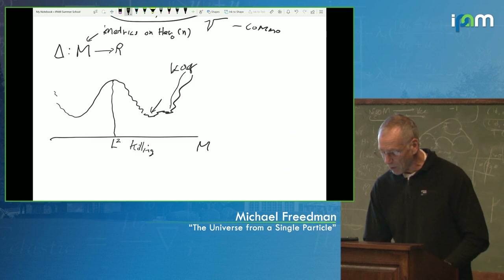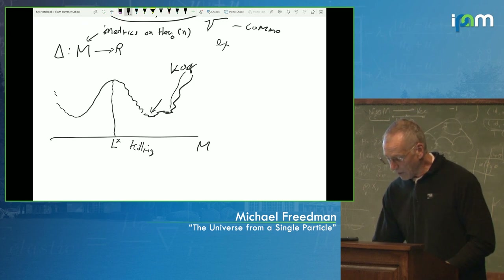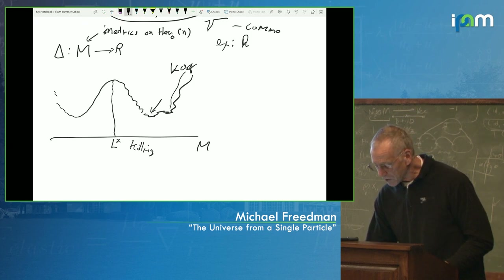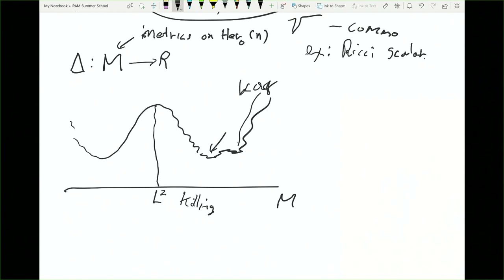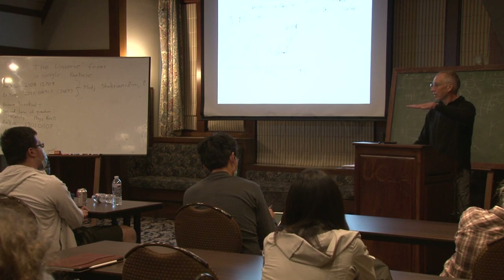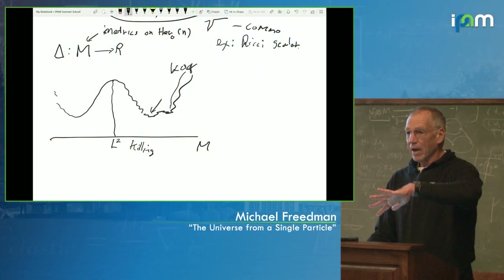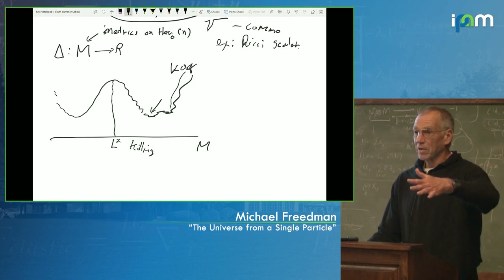My favorite example of delta, the best one theoretically, is the Ricci scalar. A metric on Hermitian matrices is equivalently a metric on the Lie algebra of SU(N), and a metric on the Lie algebra is the same as a left-invariant metric on the entire group. In Riemannian geometry, as soon as you put a Riemannian metric on the group, you can start talking about curvature. The scalar curvature — the Ricci scalar — is a number you get by contracting all the indices of the Riemann tensor.